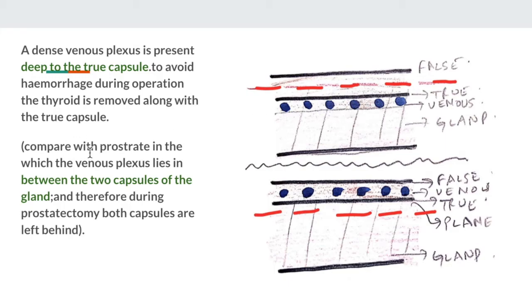Comparing this with the prostate gland: in the prostate, the venous plexus is present between the false capsule and the true capsule. Therefore, when removing the prostate, both capsules can be left behind since the venous plexus lies between them — not deep to the true capsule as in the thyroid. This is an important exam question.